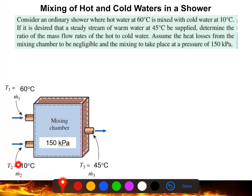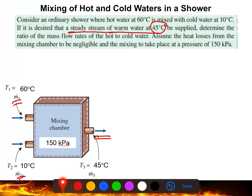One inlet carries hot fluid and the other carries cold fluid. Both streams enter the mixing chamber and mix together. According to the question, if a steady stream of warm water at 45°C is desired at the outlet, we need to determine the ratio of the mass flow rates of the hot fluid and the cold fluid.